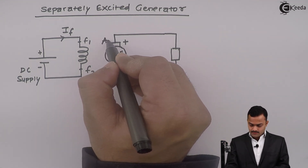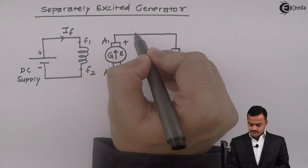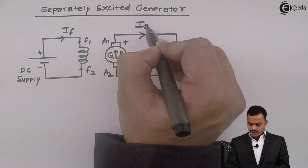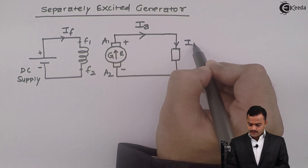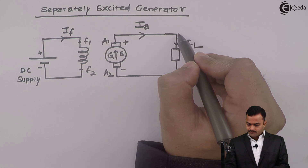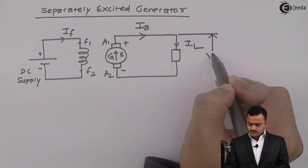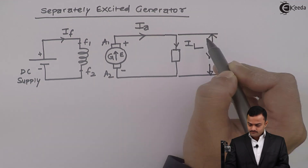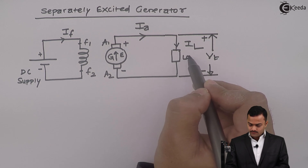These are the terminals A1 and A2. Armature current IA will be the same as IL. It will develop a terminal voltage across the load, which is VT. This is a load.